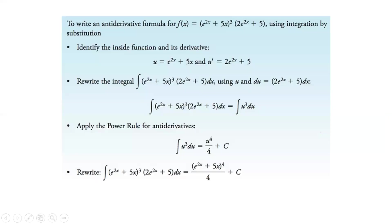If we need to take the antiderivative of this function, we look at the two pieces and decide which one to call du and which part is the rest. In this case, we're going to say e to the 2x plus 5x is our u. If we take the derivative of that, we get 2e to the 2x plus 5. And that's exactly what this piece is — that's u prime. So now we can substitute: u cubed for this part, and this other piece becomes du.